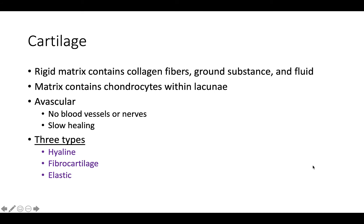Now a little bit about cartilage. The rigid matrix contains collagen fibers, ground substance, and fluid. The matrix contains chondrocytes within lacunae. Cartilage is avascular — there are no blood vessels or nerves — which is why when someone tears cartilage or injures it, it heals slowly. It takes a very long time because of the lack of blood flow; it relies on nutrients being exchanged from other tissues that do have blood flow.